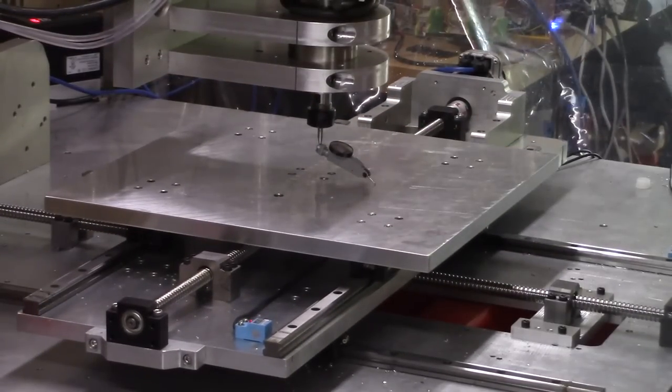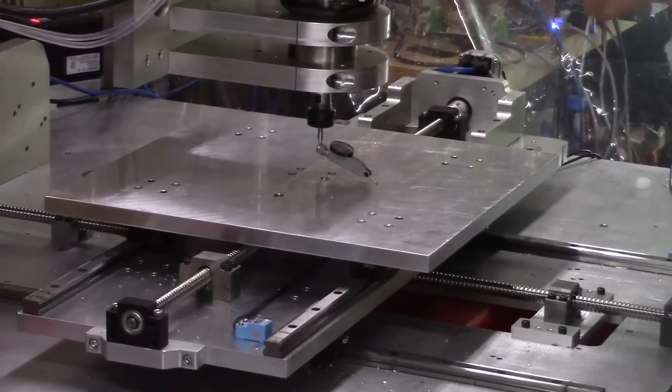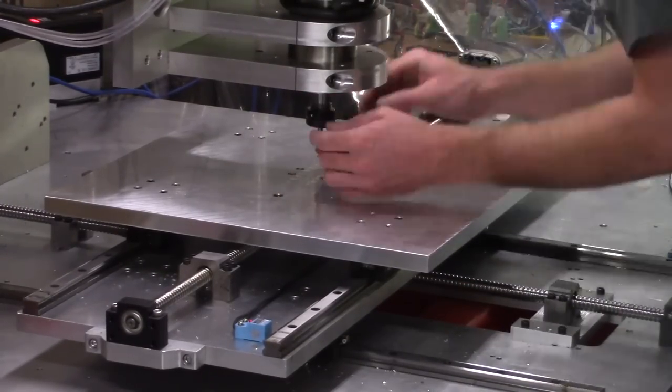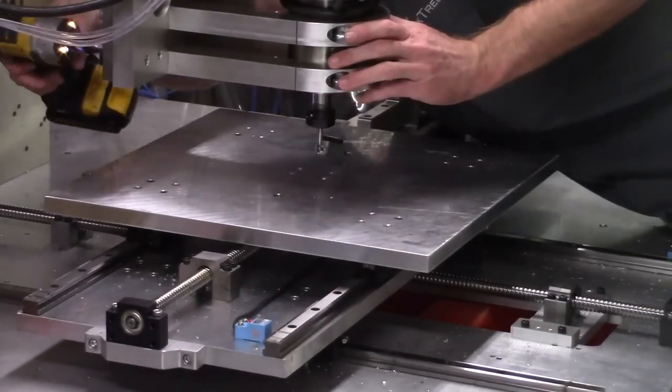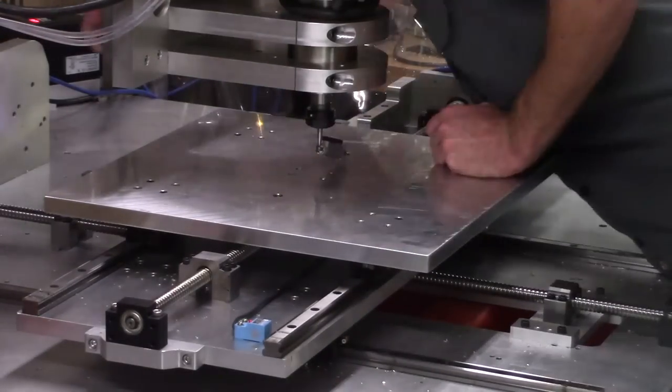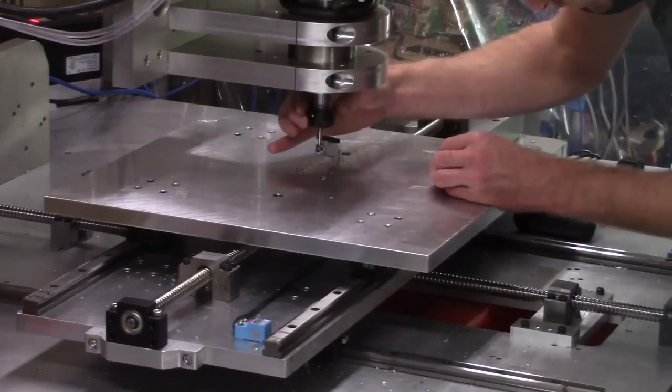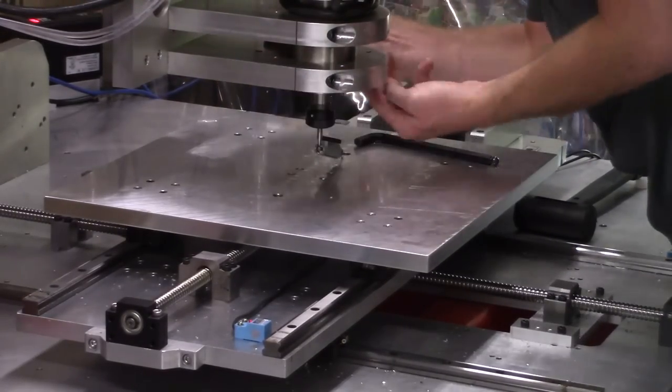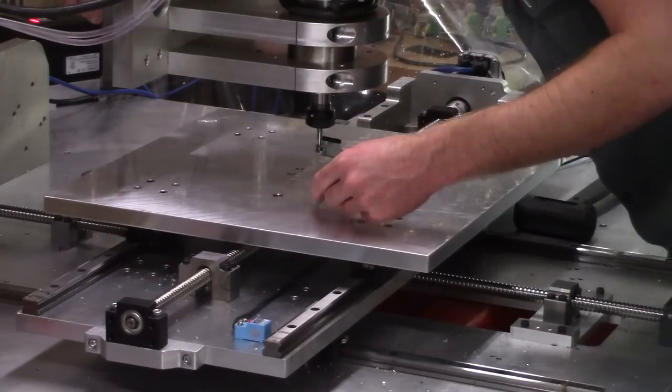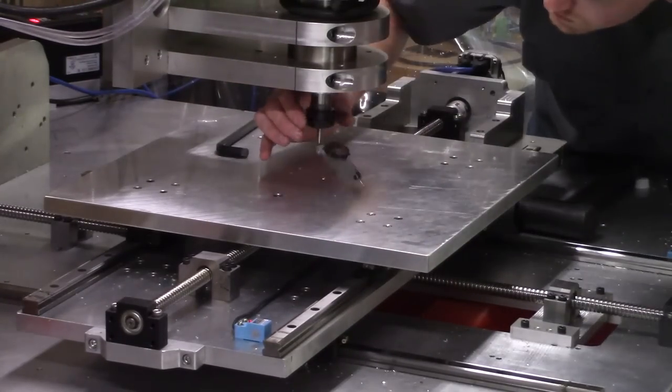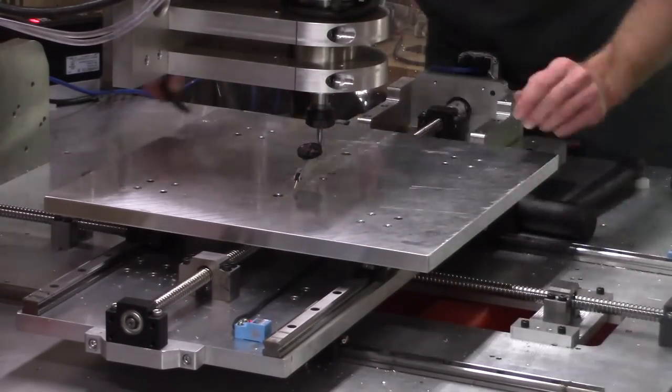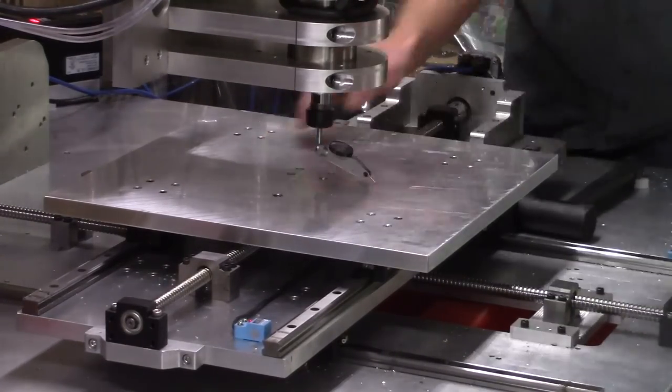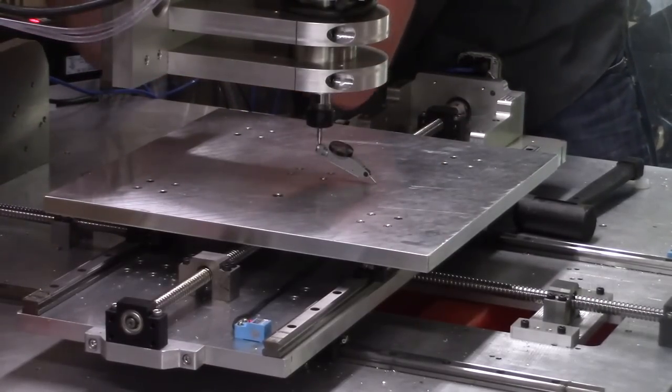One final thing, tramming the head. The initial bolt up was actually really good despite not attempting to get it parallel with the table. It was nearly dead on in the Y axis and about five thousandths over five inches in the X. A little tweaking of the rotation of the head and that was all it needed to get in line pretty much perfectly. No shims or anything were needed so I must have gotten pretty lucky in machining.